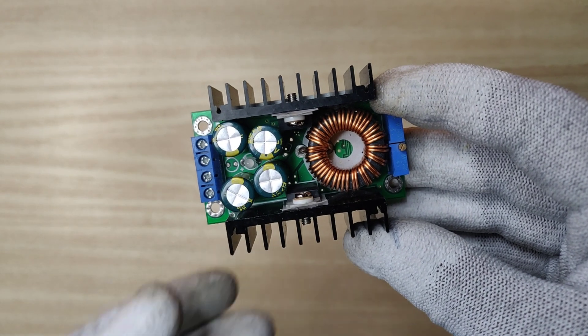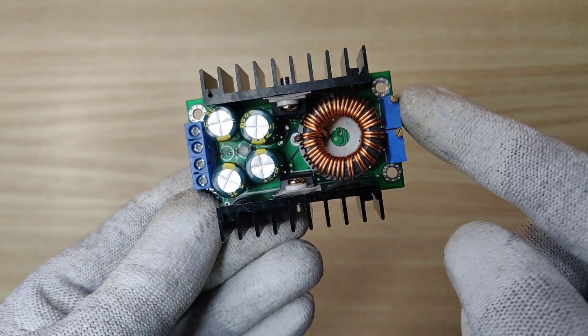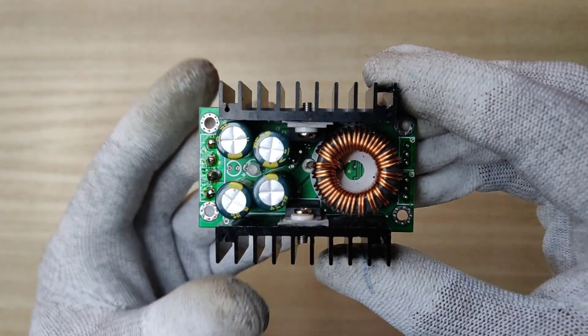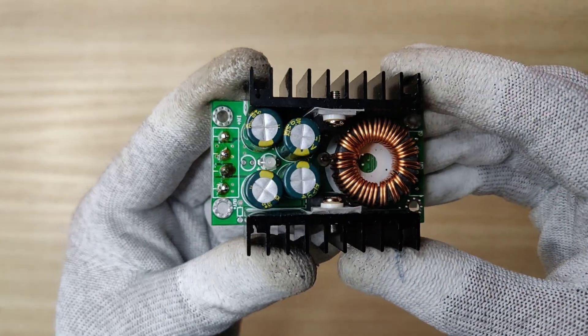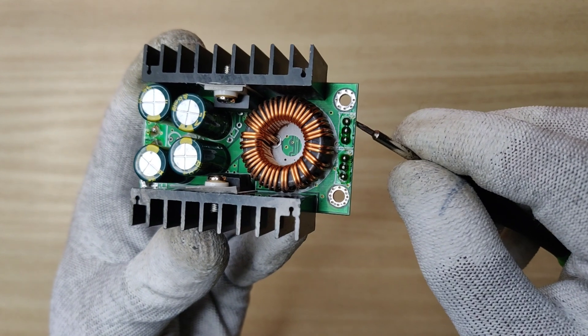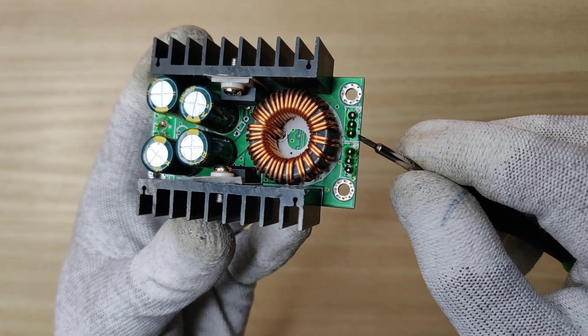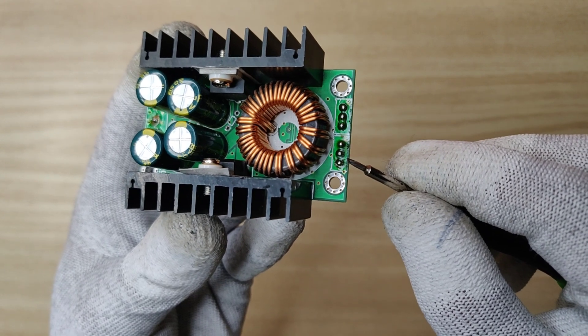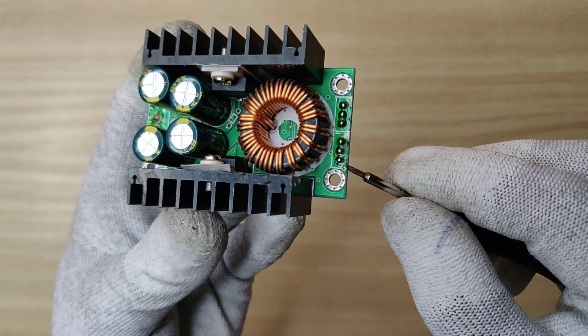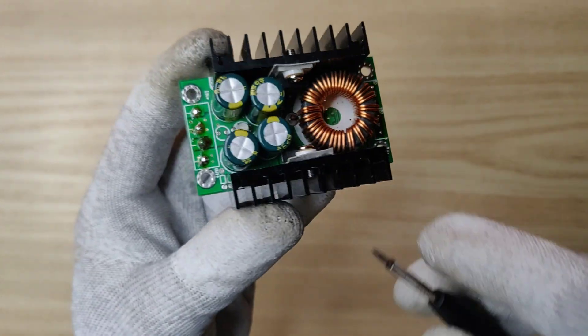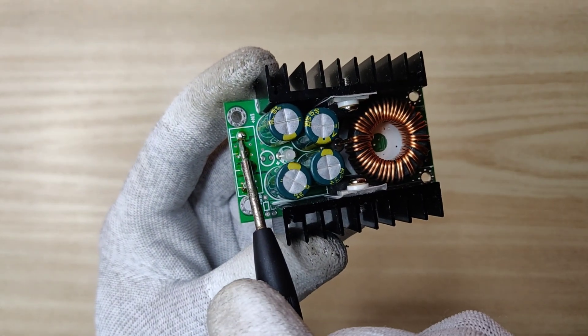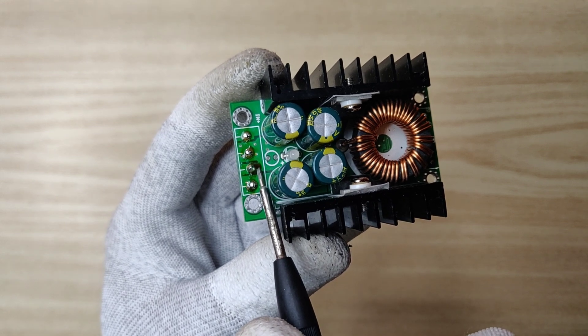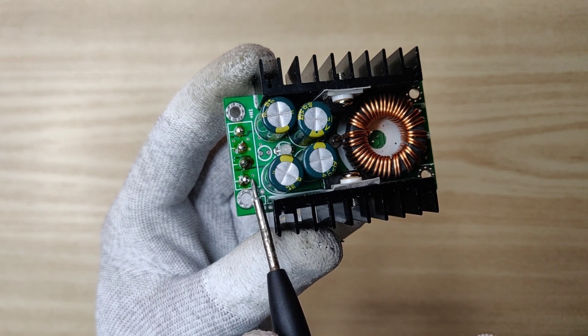Now take this module and we need to desolder these two potentiometers and also these connectors. Here I pulled them out from the board. As you can see, here is pin 1, pin 2, pin 3 of voltage adjustment potentiometer, and here is pin 1, pin 2, pin 3 of current adjustment potentiometer. And here is DC input positive, here DC input negative, here DC output negative, and here is DC output positive.